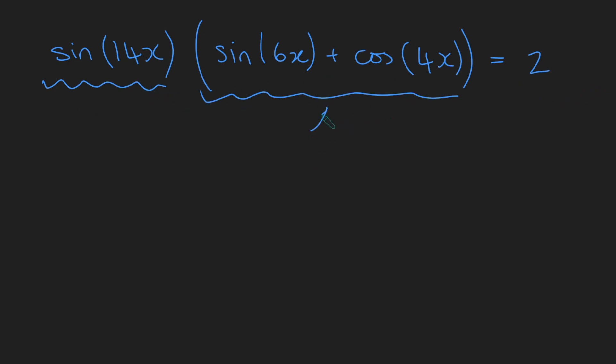So in other words, this guy here must be plus or minus 2, and this guy here must be plus or minus 1. And that's the only possible way that those can multiply to give me 2. So either this one's 1 and this one's 2, or this one's minus 1 and this one's minus 2. So we actually just have two separate cases to check.